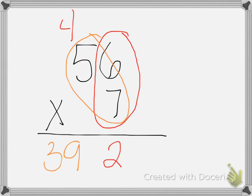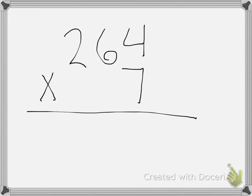We then moved into even more digits. Three by one, and it looks something like this: 264 times 7. Again, I start with my ones. 7 times 4 is 28. Eight in the ones, carry the two.